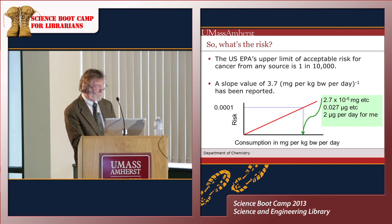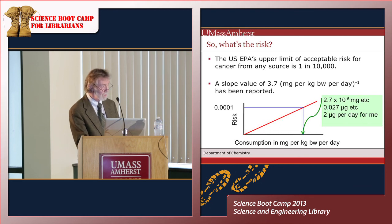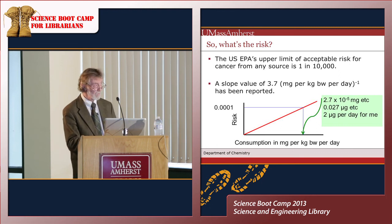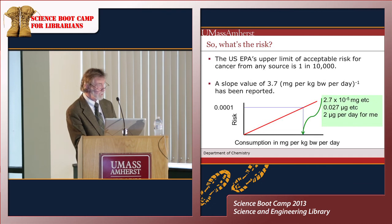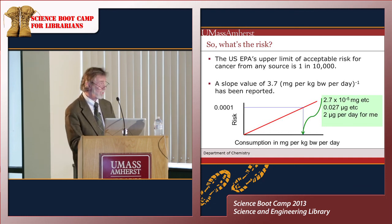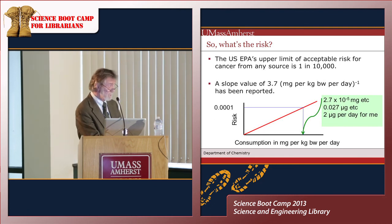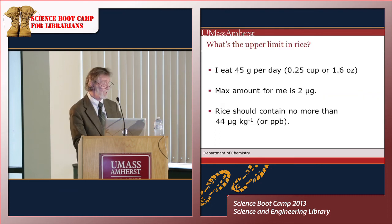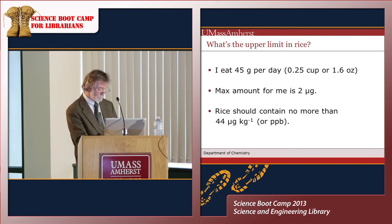So my maximum daily consumption before reaching that acceptable risk value is about 2 micrograms of arsenic in the more toxic form. That's the background to why we might be concerned. But we need to overlap that with: how much rice, or how much food containing arsenic, do we actually eat?